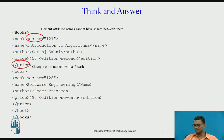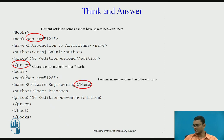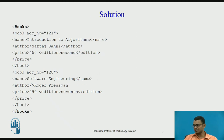The second error is that the book closing tag is not marked with a slash — it shows 'book' instead of '/book', which is an error. The third error is that the element name is written in different cases — it starts with a lowercase 'n' in 'name' but closes with an uppercase 'N' in 'Name', which is not permitted since XML is case sensitive. The final corrected XML document can be viewed in a web browser.